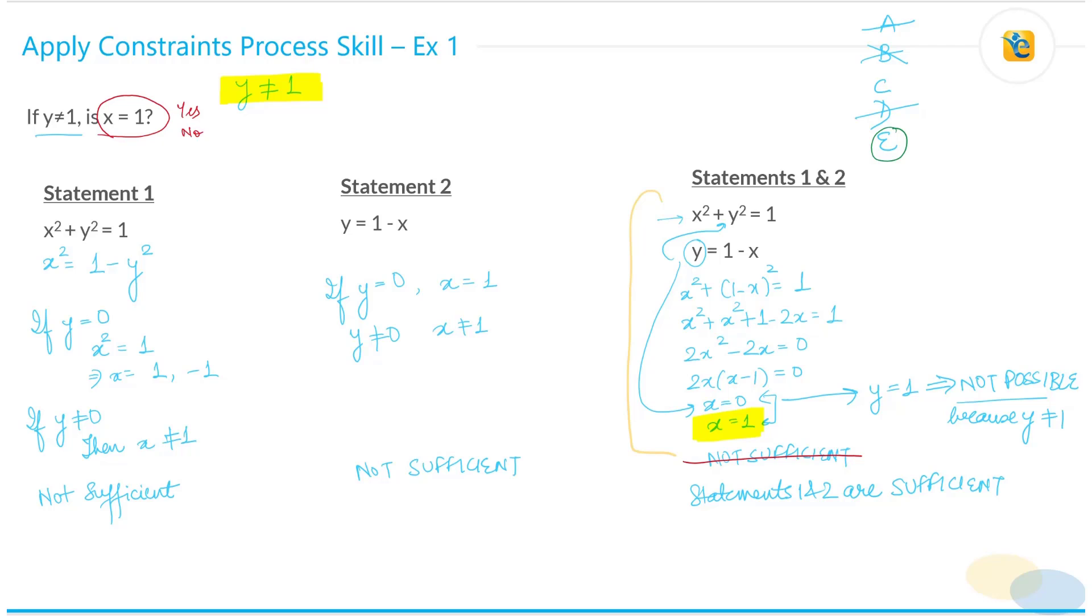Now again I want you to observe this very carefully. Over here we have this constraint which y is not equal to 1 and it's very important to utilize all the constraints that are given to you in the question statement as well as based on your conceptual understanding. So the constraints from both these sources need to be utilized in the solution. In this case we failed when we first did the solution and we arrived at the fact that x could be 0 or 1, we did not apply that constraint and that's why we would have selected incorrect answer choice.